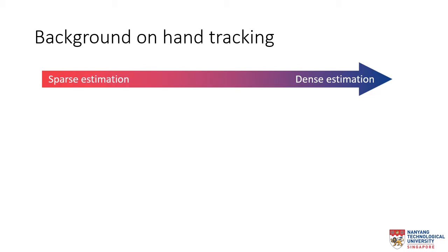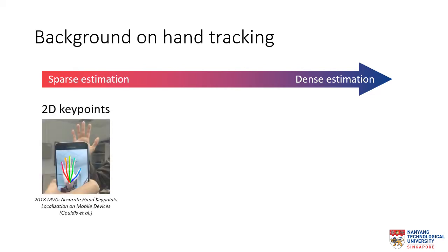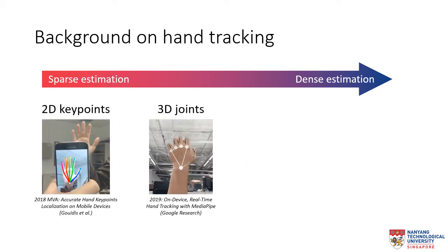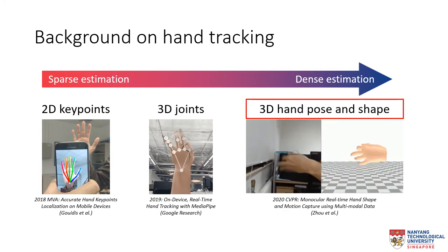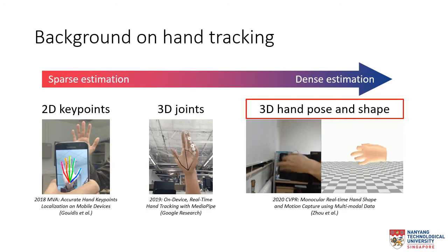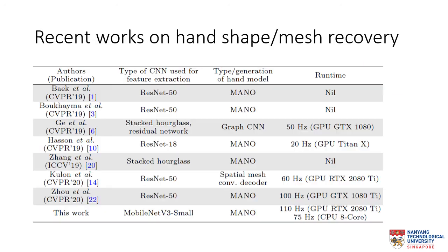Now we take a look at some background on hand tracking. Research on hand tracking based on colour images has progressed from estimating sparse 2D keypoints to 3D joints, and recently it is moving towards dense estimation of 3D hand pose and shape, because a 3D hand mesh is much more expressive compared to a 3D hand skeleton. A summary of recent works on hand mesh recovery is listed in the table, and we can see that most methods rely on the popular ResNet architecture to extract image features, and they can only run at real-time rates on GPU.